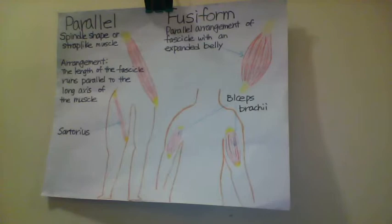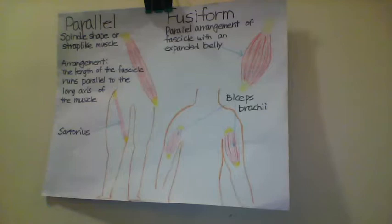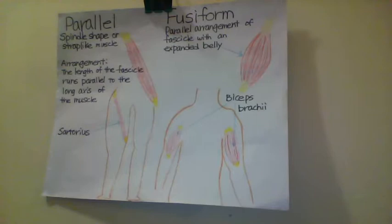A parallel muscle is a spindle shape or strap-like muscle. The fascicles of a parallel muscle are arranged in the same direction as the long axis of the muscle. The majority of skeletal muscles in the body have this type of organization. One example of this type of muscle is the sartorius muscle.